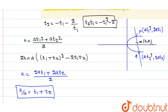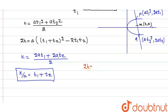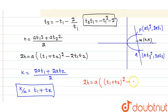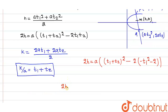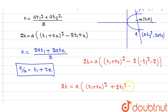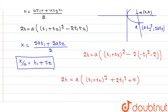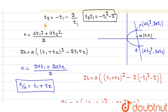Now I substitute these values. So 2h = a[(t₁ + t₂)² - 2t₁t₂] = a[(t₁ + t₂)² - 2(-t₁² - 2)] = a[(t₁ + t₂)² + 2t₁² + 4]. Also from the normal relation, t₁ + t₂ = -2/t₁.